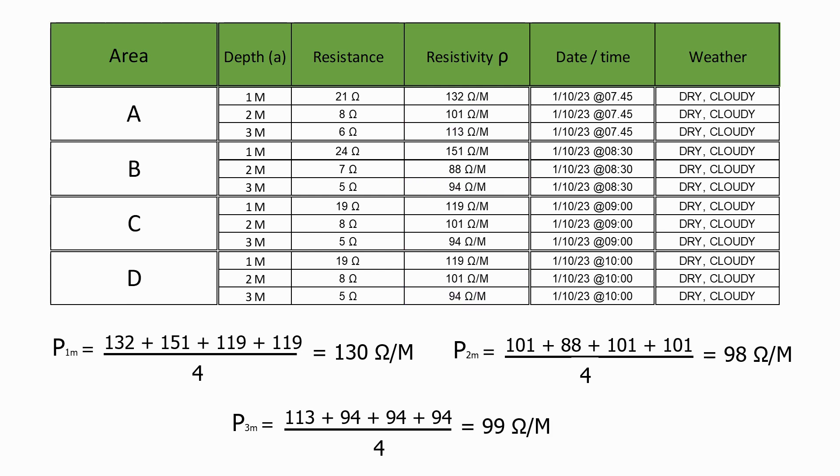As you can see, the soil resistivity tends to reduce as the depth of the soil increases. This effect is quite common and is normally due to the water table, which will sit at a certain depth below ground level. As soon as you get below the water table, the soil will become saturated with water, which will always reduce the value of the soil resistivity.